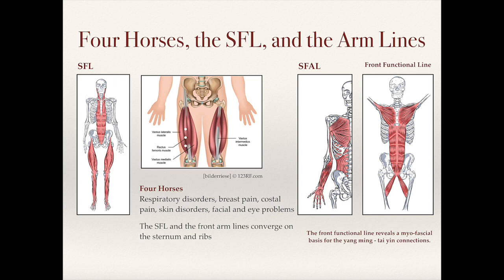The image on the right shows the superficial front arm line, which is part of the lung meridian, and how it connects to pec major. The far right image shows how the pecs connect to the rectus abdominis and how these converge in the area of the sternum. This gives us a lot of insights into the way in which the four horses work.